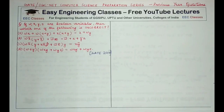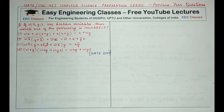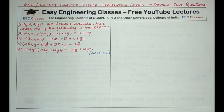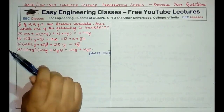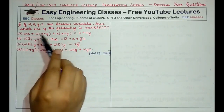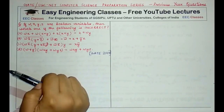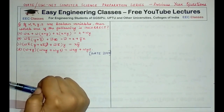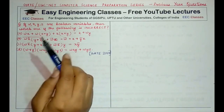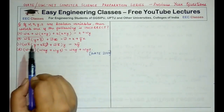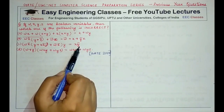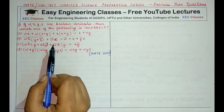The question is: if w, x, y and z are boolean variables, which one of the following is incorrect? You are given four options. To solve this, reduce the left hand side and match it with the right hand side, solving all parts until one option comes out to be incorrect — meaning the reduced forms of both sides do not match.